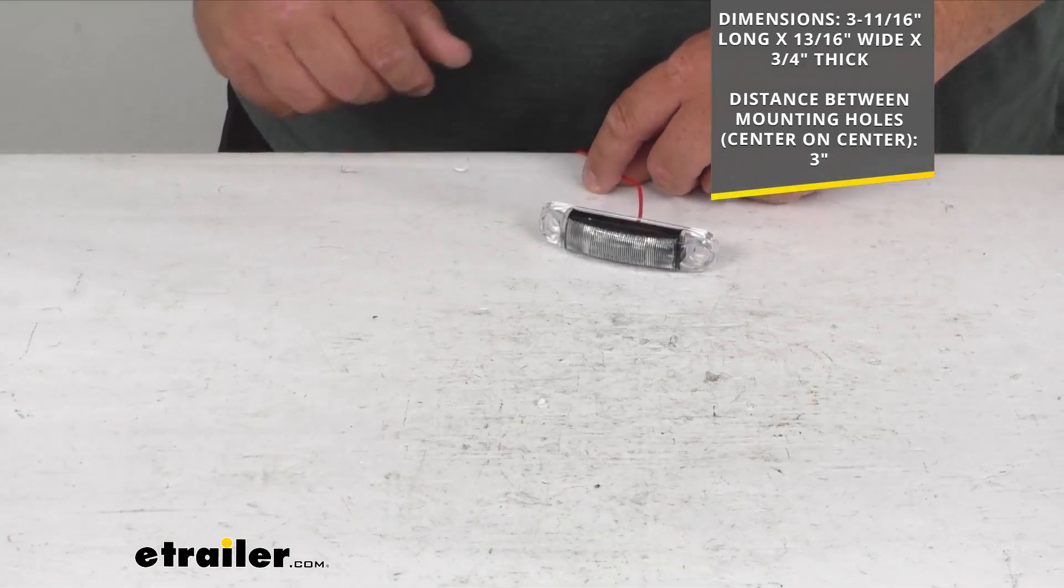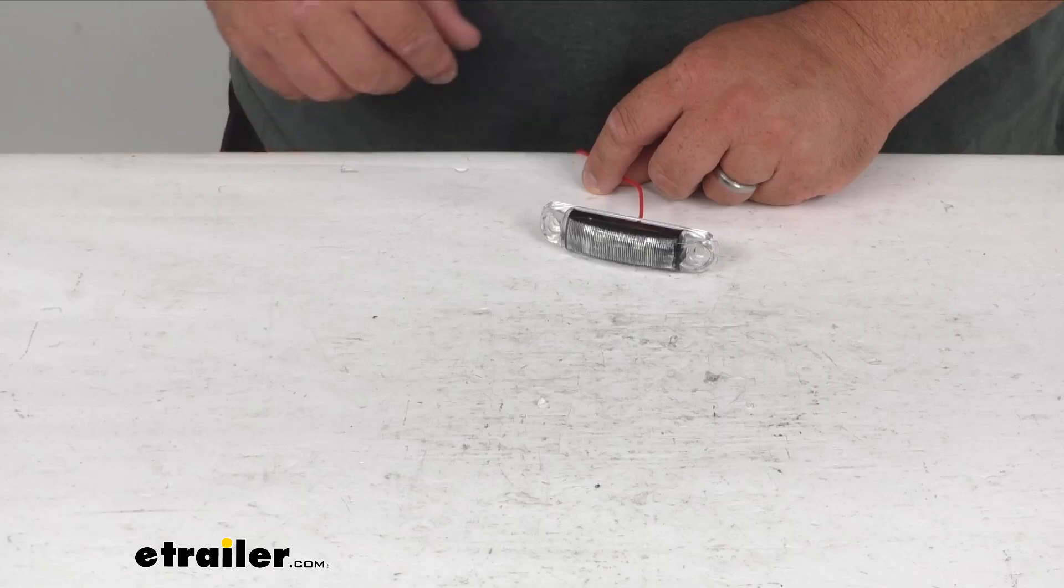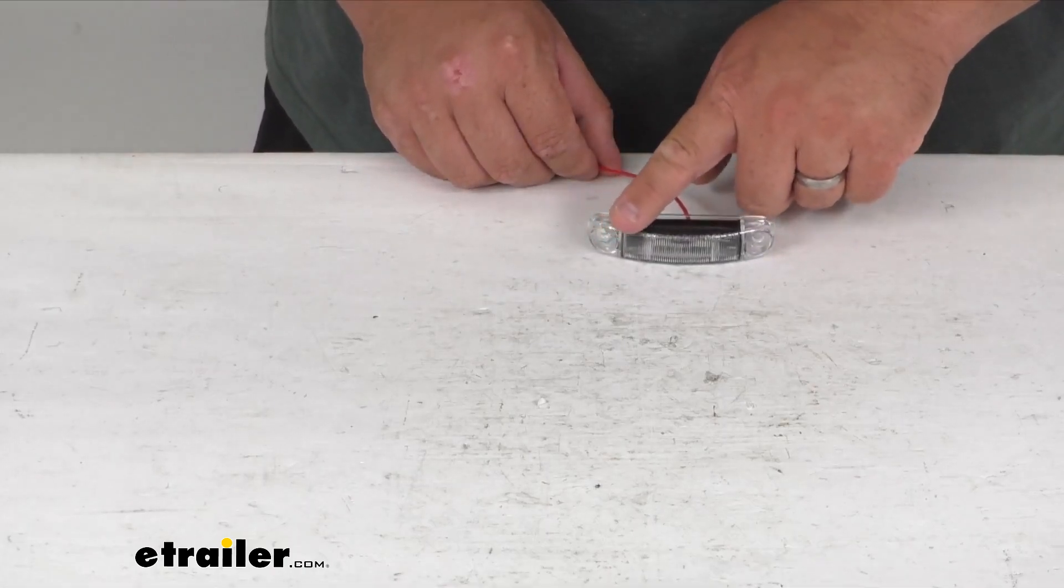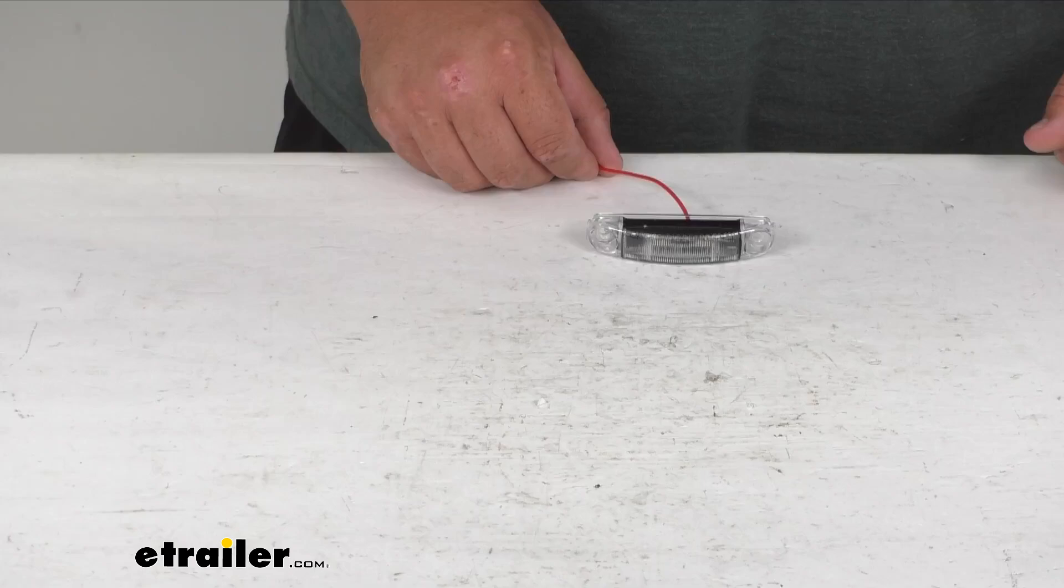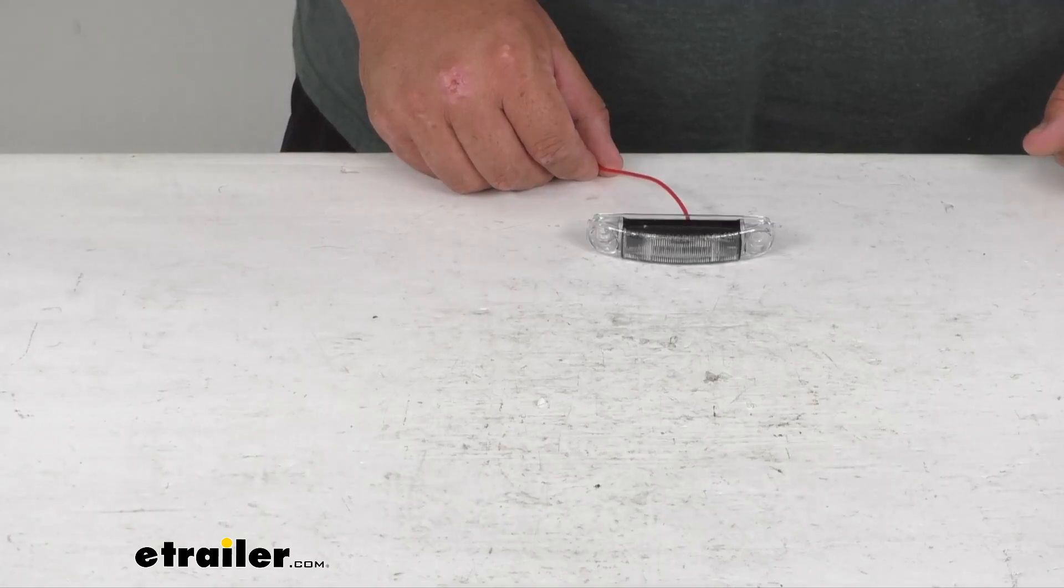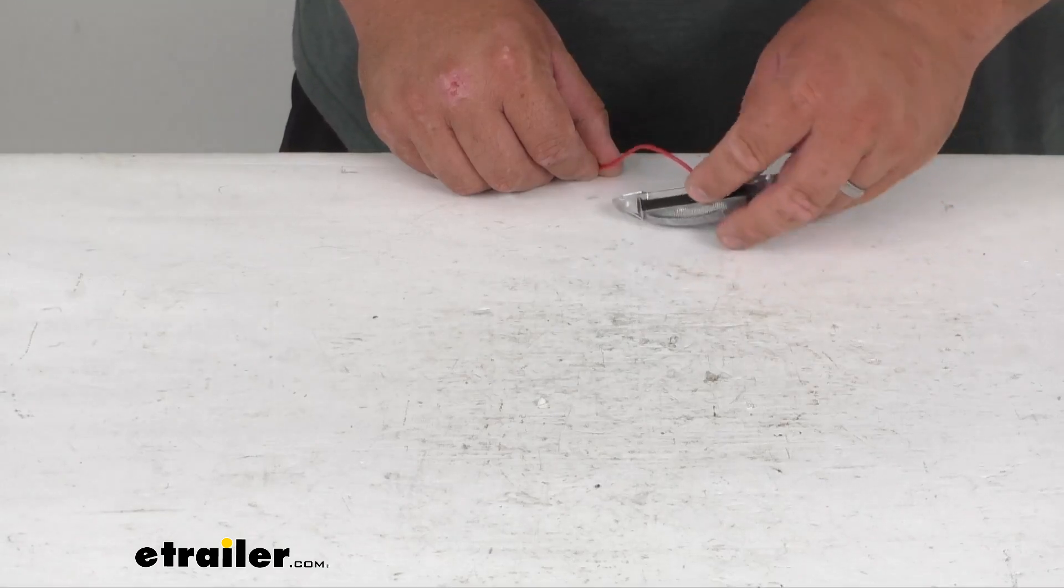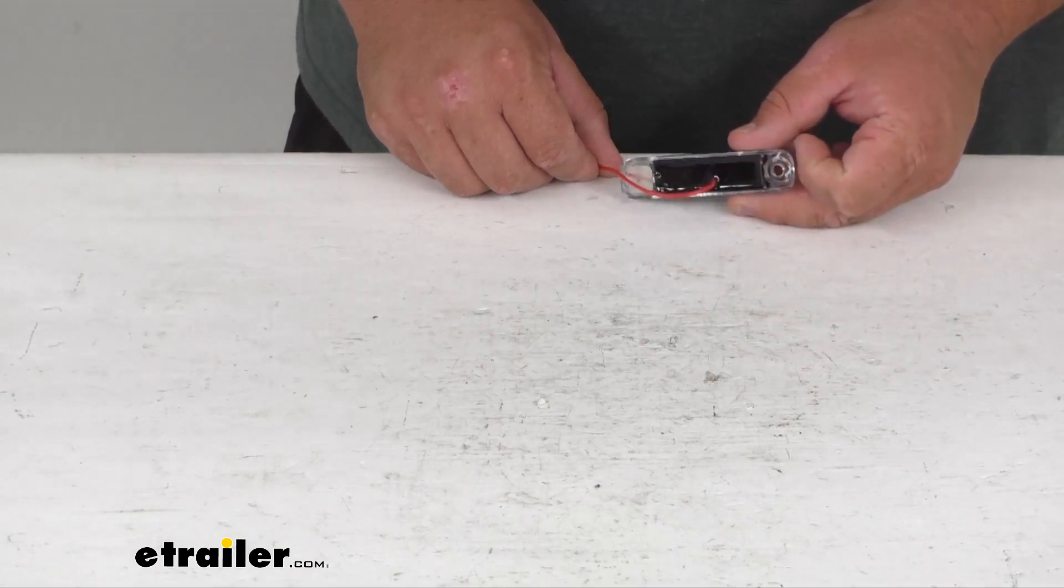The polycarbonate housing and lens assembly features a clear lens over two red LEDs. It works with 12-volt DC electrical systems and simply surface mounts to the trailer. You will need your own hardware.